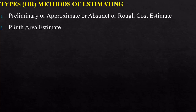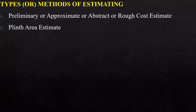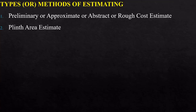The second type of cost estimate is the plinth area estimate. Here the estimate is prepared on the basis of the plinth area of the building. The rate for such an estimate is deduced from the cost of similar buildings having similar specifications, heights, and construction in that particular locality. The plinth area estimate is calculated by multiplying the plinth area of the building by the plinth area rate.